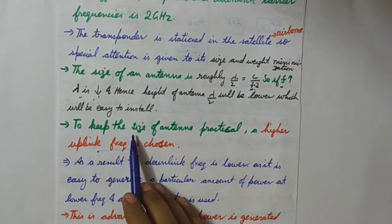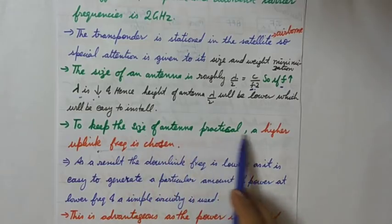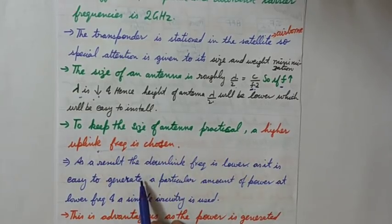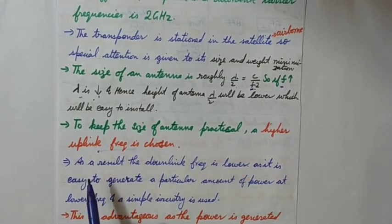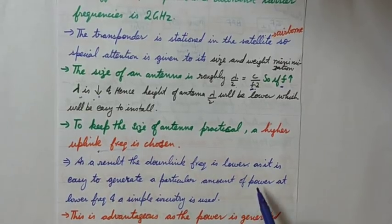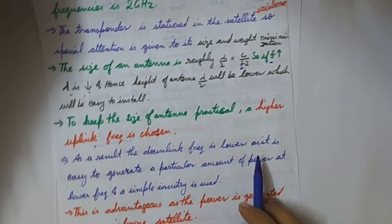To keep the size of antenna practical, a higher uplink frequency is chosen. And now we are talking about downlink frequency. Its value is 2 gigahertz less than the uplink frequency.